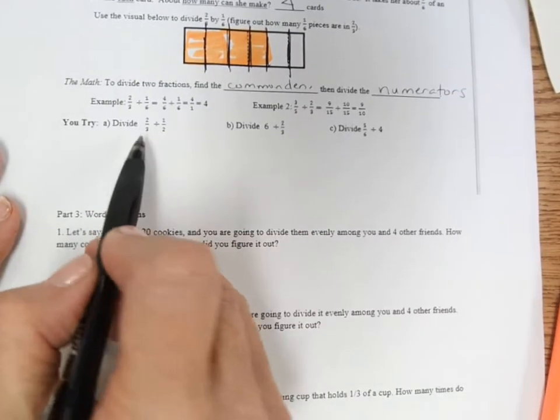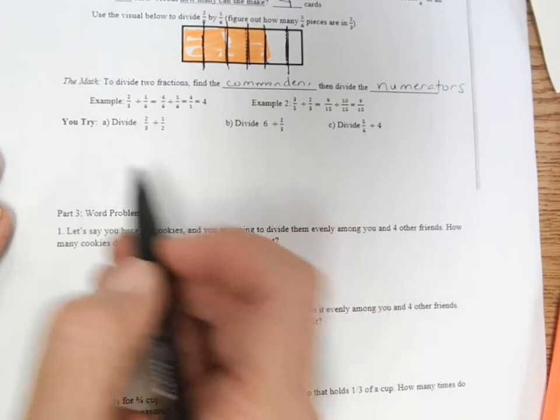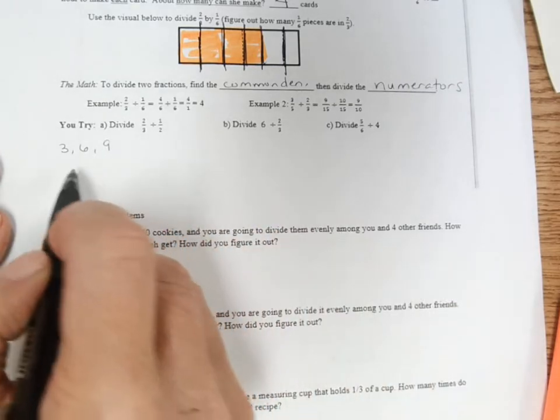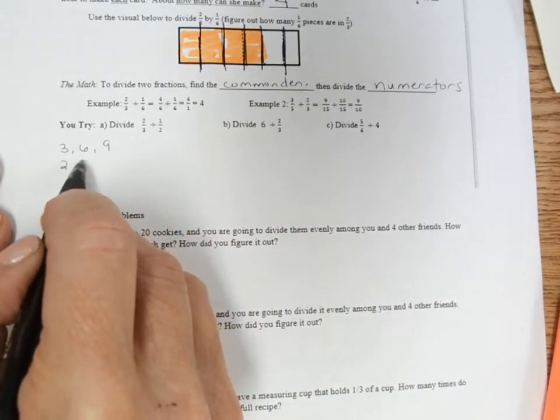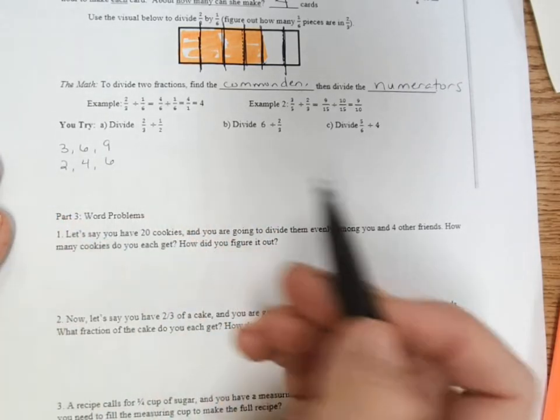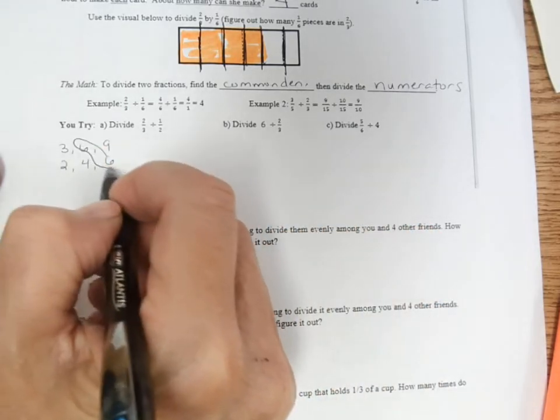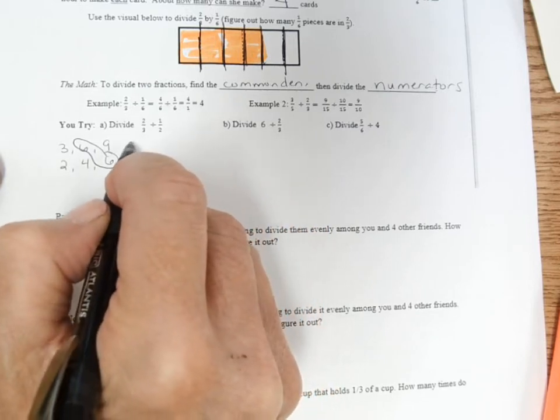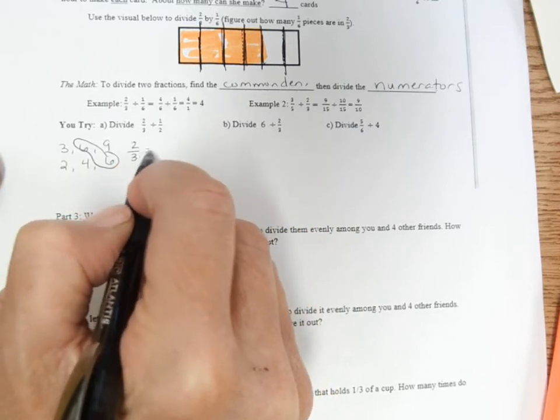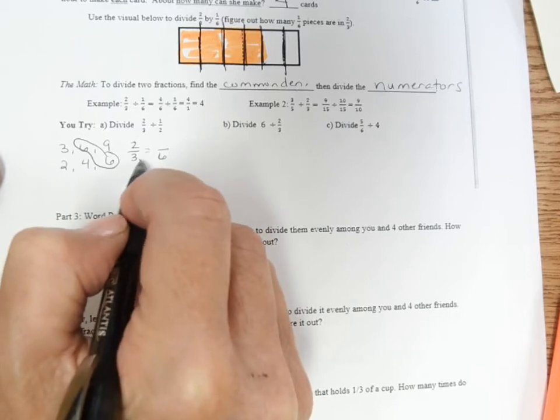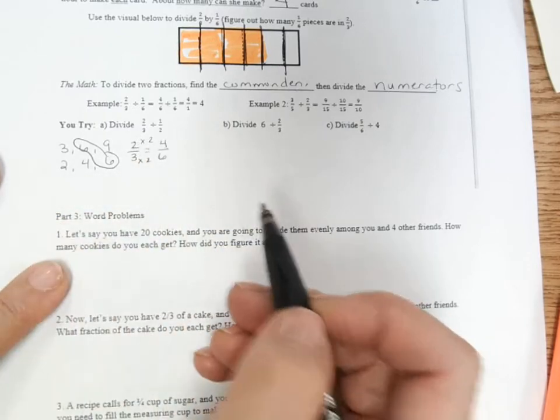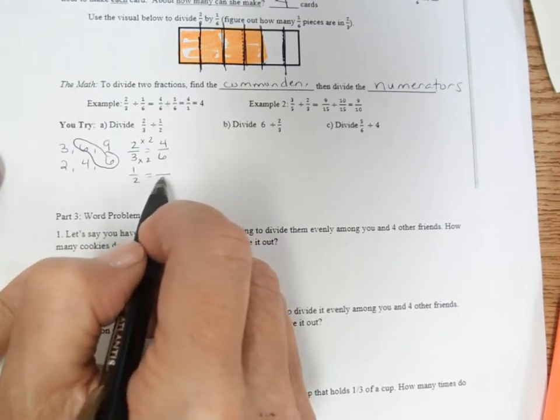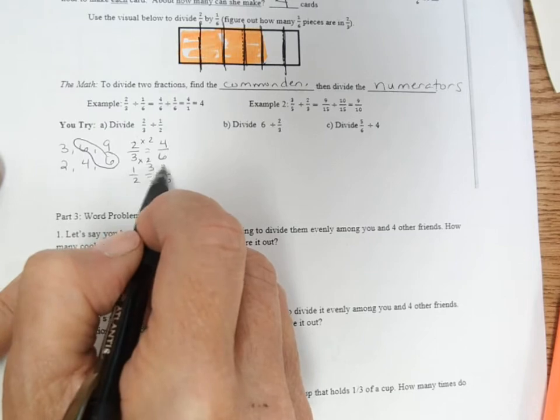So here we go. Two-thirds divided by one-half. So I think about the number three and its multiples, and the number two and its multiples. The least common multiple is six. That means that my common denominator for thirds and halves is going to be six.